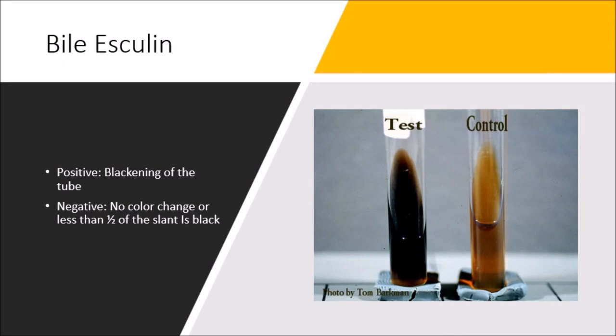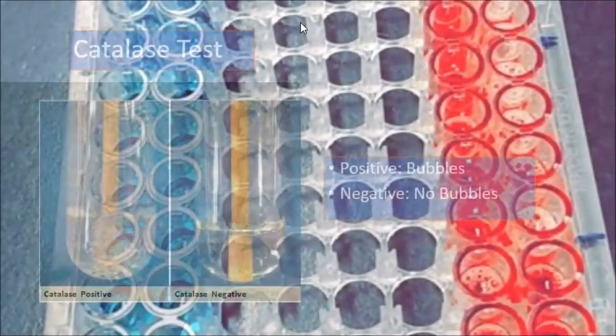The purpose of this test is to differentiate microorganisms based on their ability to hydrolyze esculin to esculin and dextrose. The esculin reacts with ferric citrate in the medium to form a dark brown-black complex. If you look here, this would be a positive result, which is the blackening of the tube, and then you have your control, which is little to no blackening.